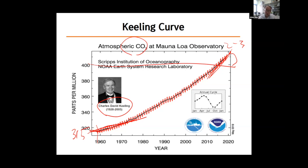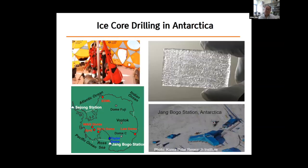So how can we get that record? And what was the background level before this kind of increase — when did it start? To answer these questions, we need a very long record. In the 1980s, scientists found a method using ice from Antarctica and Greenland. Antarctica ice samples are very good because the dust flux is very small — it's very clean ice that has lots of bubbles preserving ancient air inside.